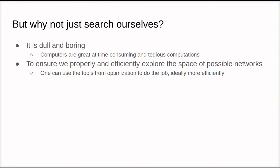And secondly, we want to ensure that we properly and efficiently explore the space of possible networks or possible parameter settings in the network. And there is always the risk of human error, focusing on the wrong parameter, forgetting that you tried one combination, and so you're duplicating a lot of work. So again, we might as well use the computer to do it. And furthermore, we can use tools from optimization to try and do the job, and hopefully more efficiently than we might do ourselves, typing away at a keyboard.